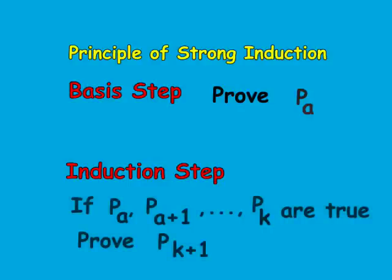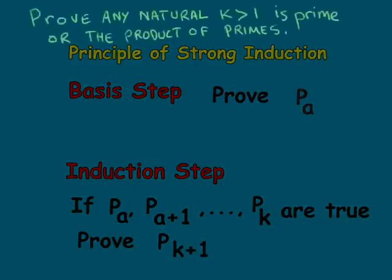Notice that the difference between the generalized principle of mathematical induction and the principle of strong induction is that we not only ask for p sub k to be valid, but we ask for a stronger statement to be valid — that is, p sub a, p sub a plus 1, p sub a plus 2, up to p sub k are all valid.